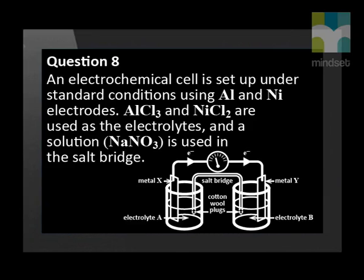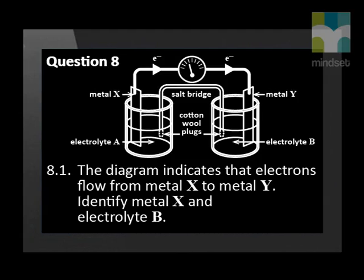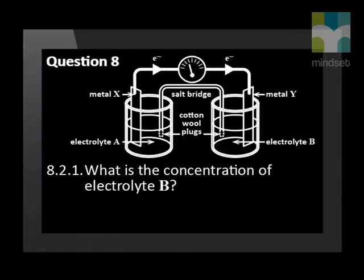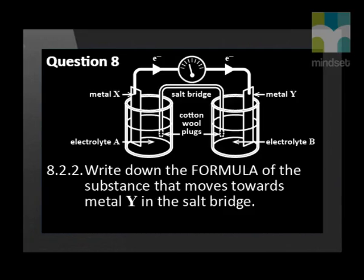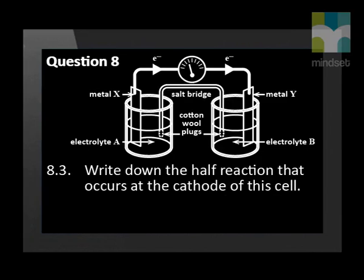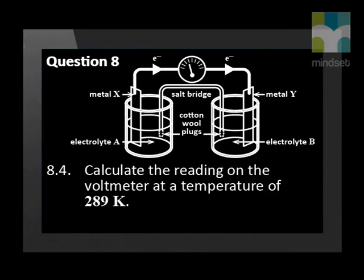The diagram shows an electrochemical cell set up under standard conditions using aluminium and nickel electrodes. An aluminium chloride solution and a nickel chloride solution are used as the electrolytes, and a solution of sodium nitrate is used in the salt bridge. The diagram indicates that electrons flow from metal X to metal Y. Identify metal X and electrolyte B. What is the concentration of electrolyte B? Write down the formula of the substance that moves towards metal Y in the salt bridge. Write down the half reaction that occurs at the cathode of this cell. Calculate the reading on the voltmeter at a temperature of 289 Kelvin.